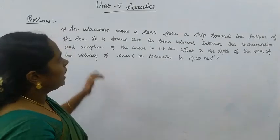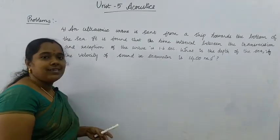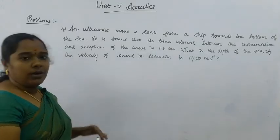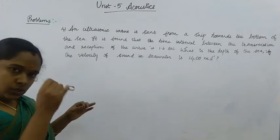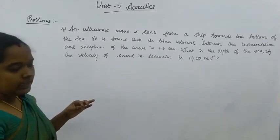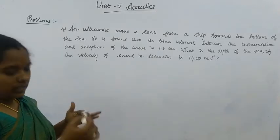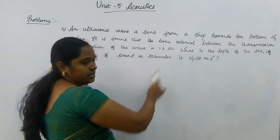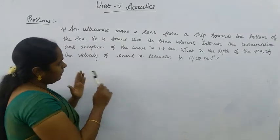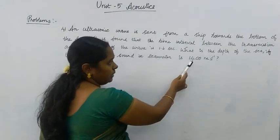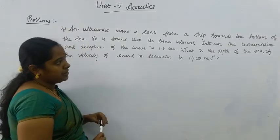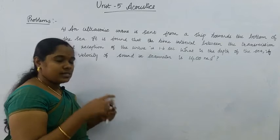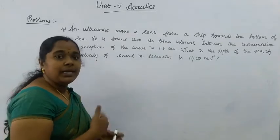What do you see here? A ship is at the surface of the sea. The ultrasonic wave is transmitted from the ship, travels down, reflects off the bottom of the sea, and returns. It is found that the total travel time is 1.6 seconds. The velocity of sound in seawater is 1400 meters per second. What we need to find is the depth of the sea — that is how far the sound waves travel to the bottom.